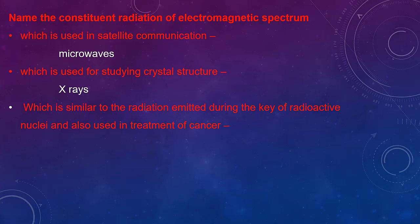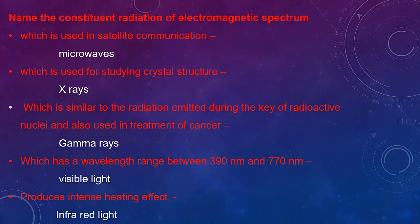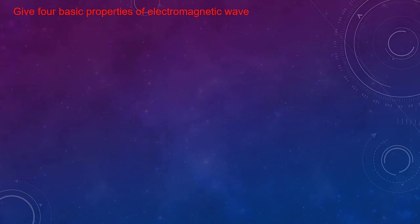During the decay of radioactive nuclei, we use gamma rays. Here you can correct it as 'decay of' not 'key of'—that's an auto-correction mistake. Which has a wavelength range between 390 nanometer and 770 nanometer? It is visible light. Which produces intense heating effect? Infrared light.